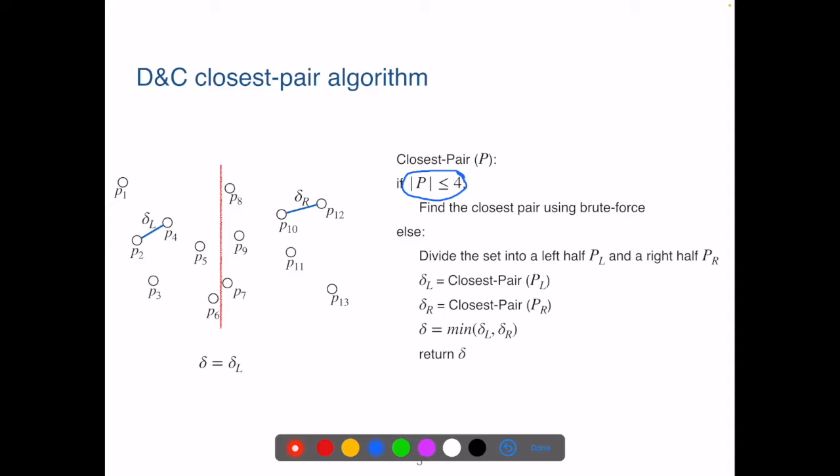For this example graph, on the left side of the dividing line, we have the smallest distance delta L between P2 and P4. And on the right side of the dividing line, we have the smallest distance delta R between P10 and P12.